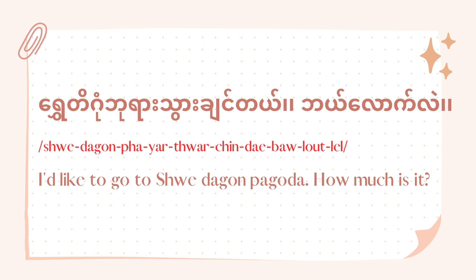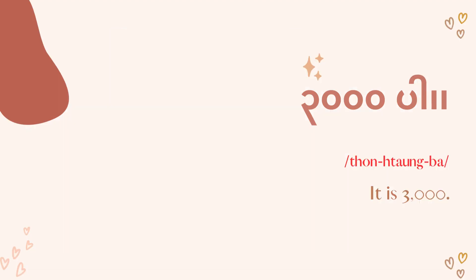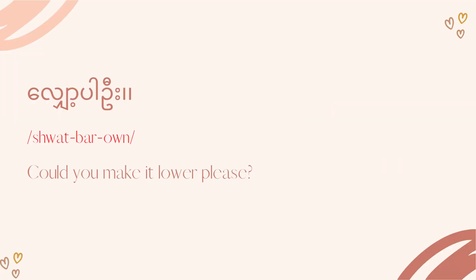The answer would be: Toun Aom Ba. Toun Aom is a four-digit number meaning 'three thousand', and Ba is the polite ending particle. So 'Toun Aom Ba' means 'It is three thousand.' Then the next phrase is Shurigong Paya Twa Jinde Balao, meaning 'could you make it lower please?'